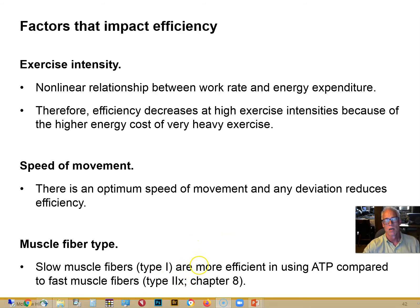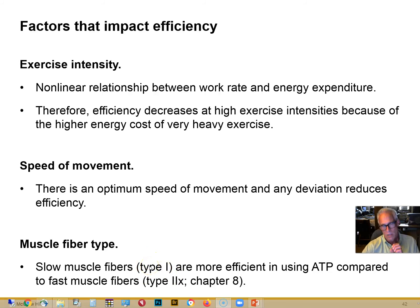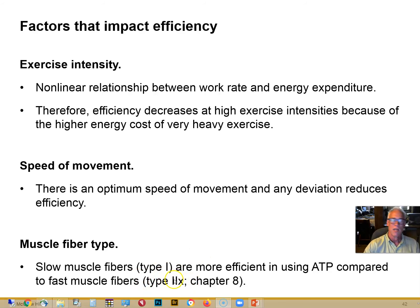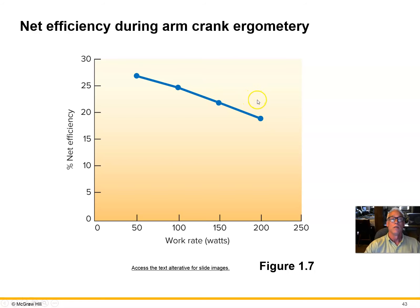Another factor is muscle fiber type. There are slow-twitch muscle fiber types — called type 1 fibers — that are very efficient. They perform aerobic respiration and produce lots of ATP: 34 ATPs per glucose using oxygen. But there are also fast, strong type 2X muscle fibers recruited for high power output, and they're less efficient. As we increase exercise intensity, we switch over more and more to these type 2X fibers, so efficiency starts to go down.